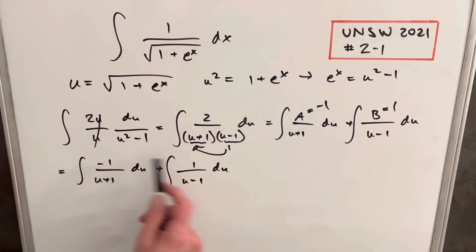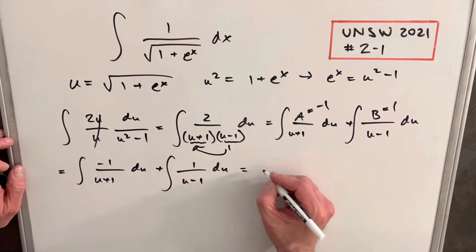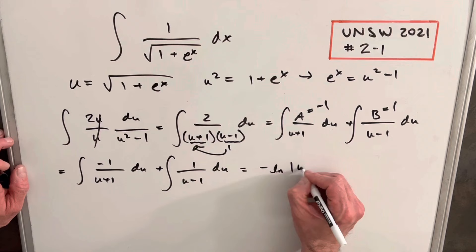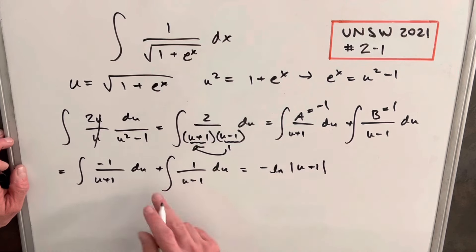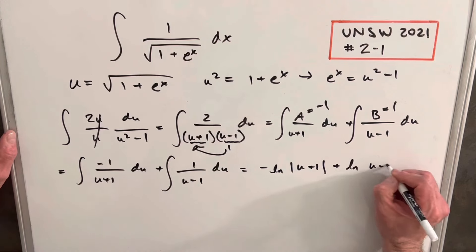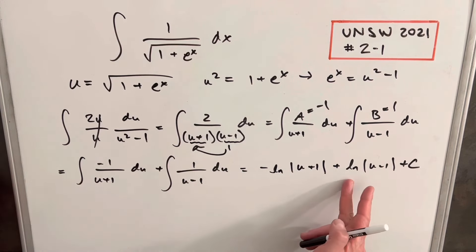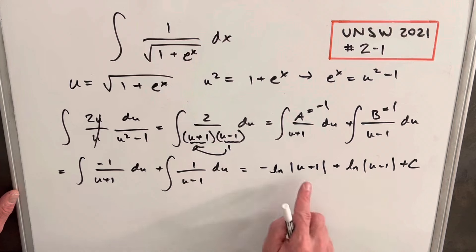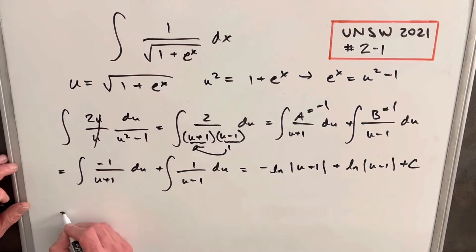Now we can integrate. The first term gives us negative ln of u plus 1, and the second term gives us ln of u minus 1. Using log properties, we can combine these as ln of (u minus 1) over (u plus 1).